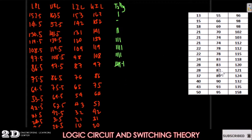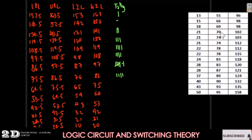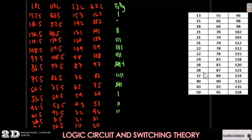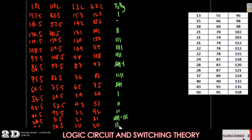Continuing the tally: for 76 to 86 we have 4. For 65 to 75: 5. For 54 to 64: 1. For 43 to 53: 2. For 32 to 42: 2. For 21 to 31: 8. For 10 to 20: 3.